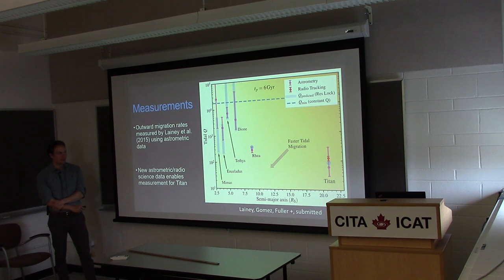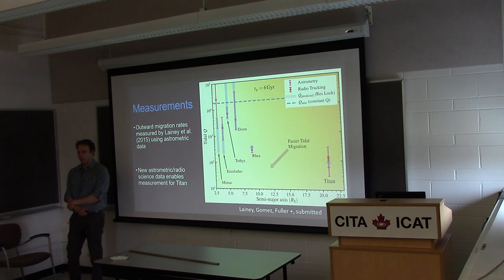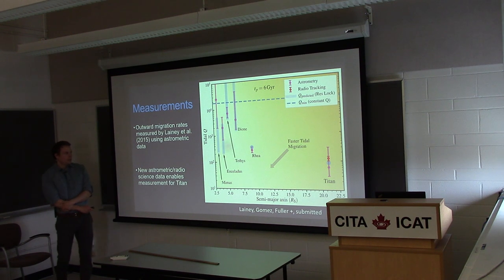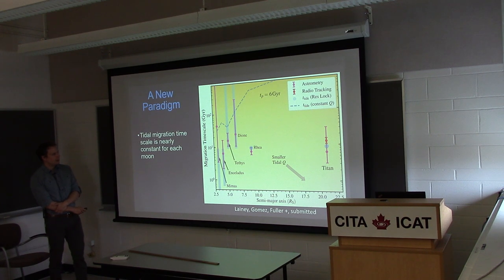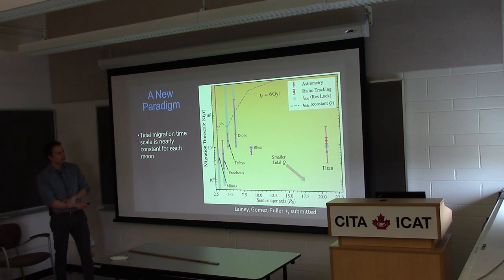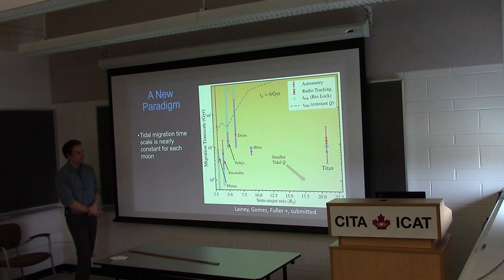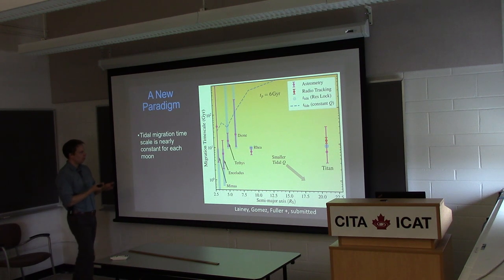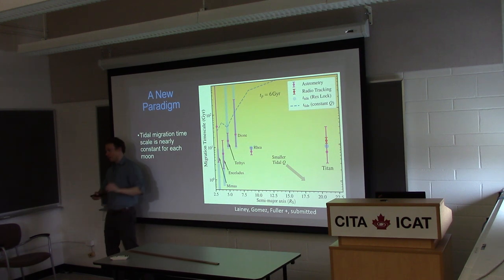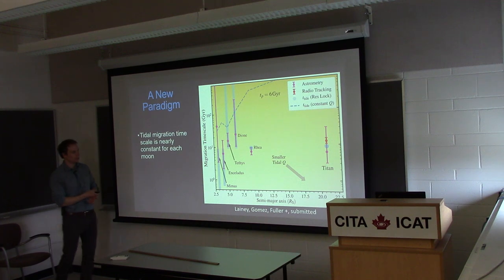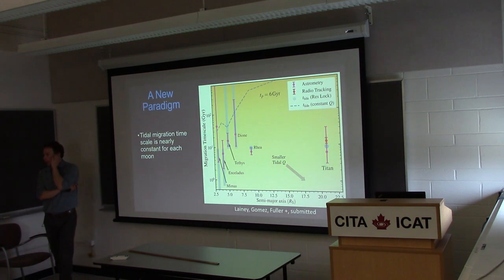These are very difficult measurements — the longitudinal shift over the Cassini mission is a very small fraction of Titan's radius. When we calculate the tidal migration timescale, which is really what we measure, all the moons have similar migration timescales of about 10 gigayears. So it looks like they're all migrating out on a timescale comparable to the evolution of Saturn, which is a priori what we'd expect from this resonance locking scenario. This is consistent with the theoretical prediction.